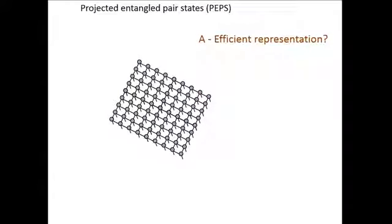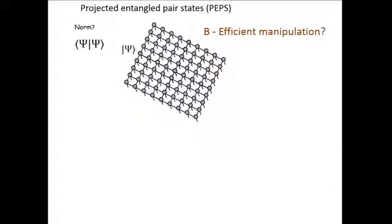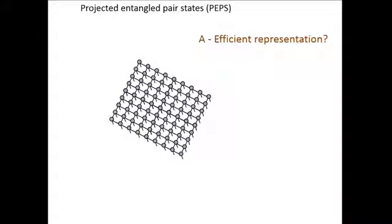Let me quickly go through some questions about PEPS. How many tensors? It's proportional to the number of sites. If we fix the bond dimension of the tensors, each tensor has a finite number of coefficients which does not depend on N, so the total number of parameters we need to specify the wave function is proportional to the number of sites - this is an efficient representation.